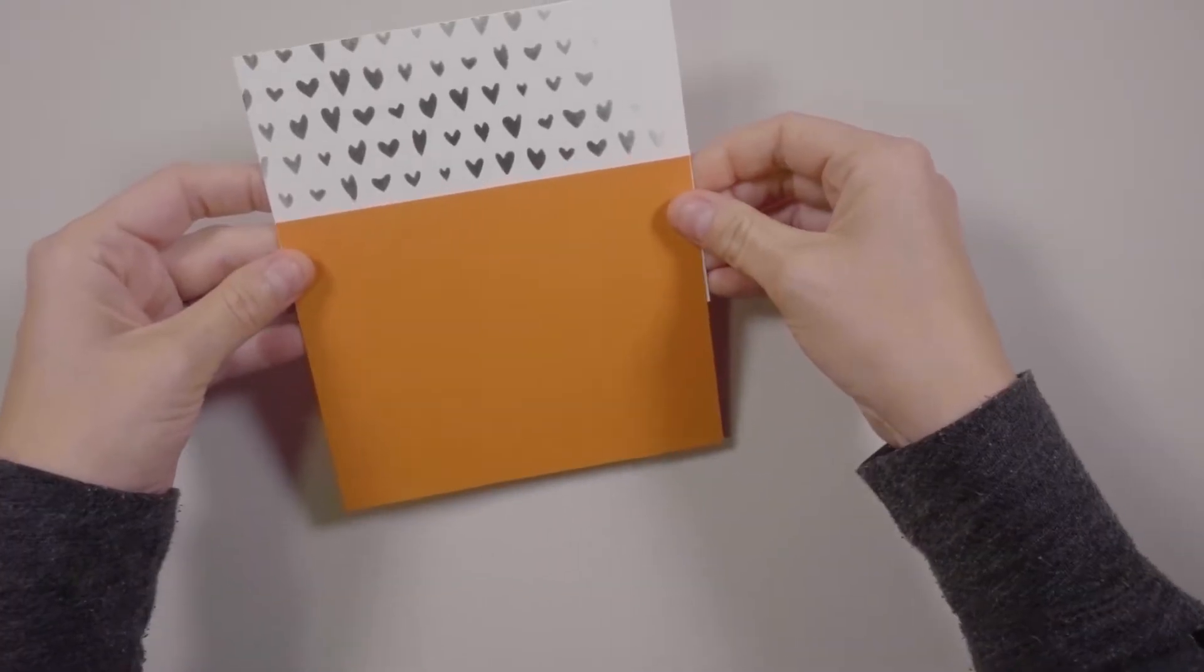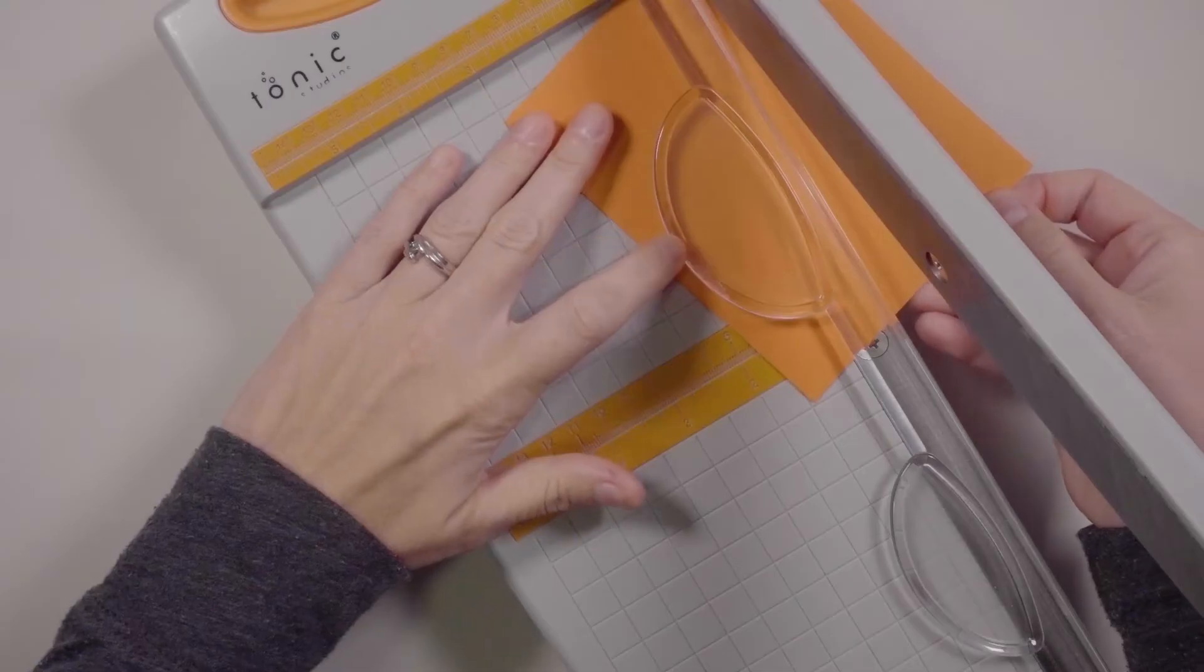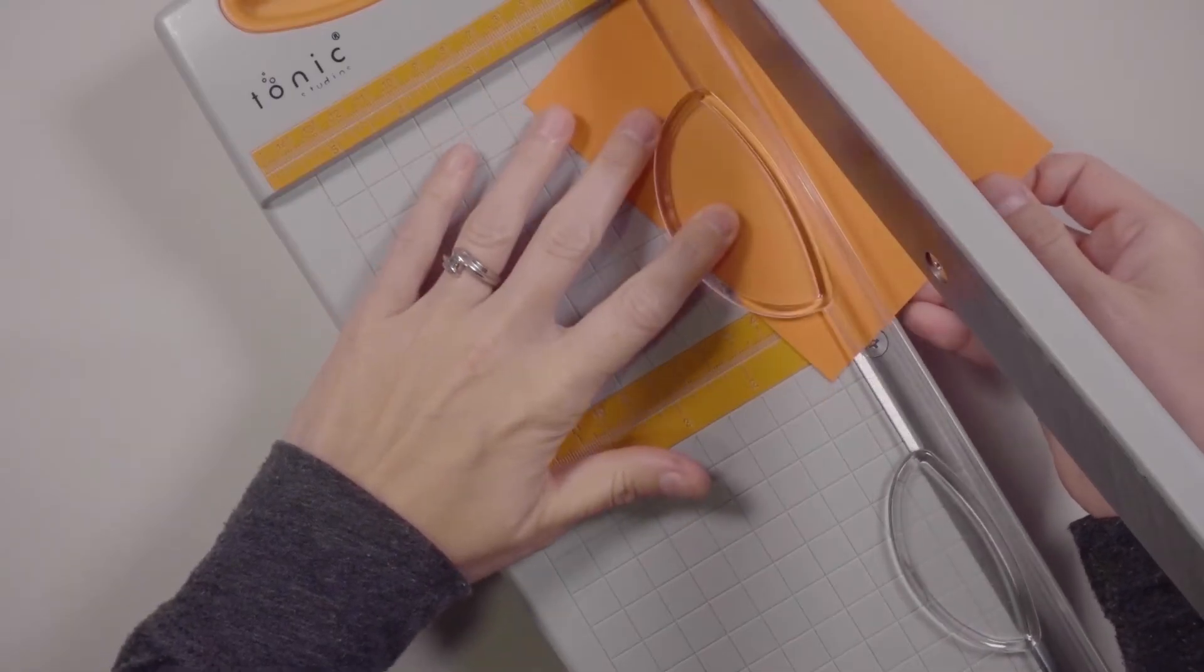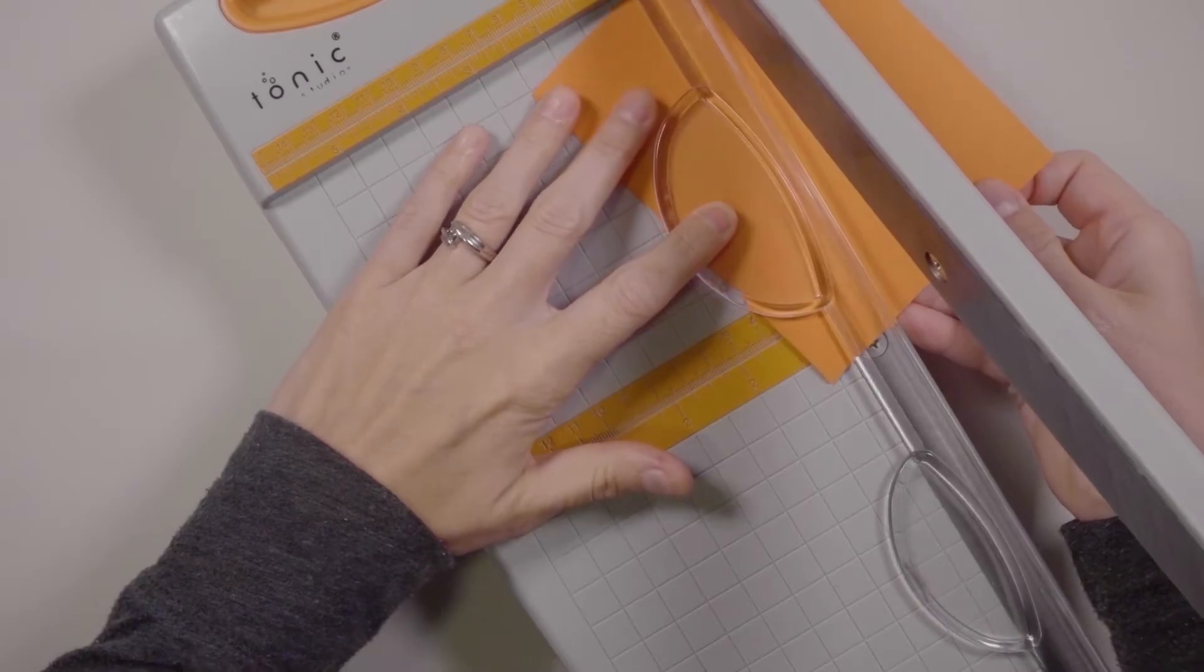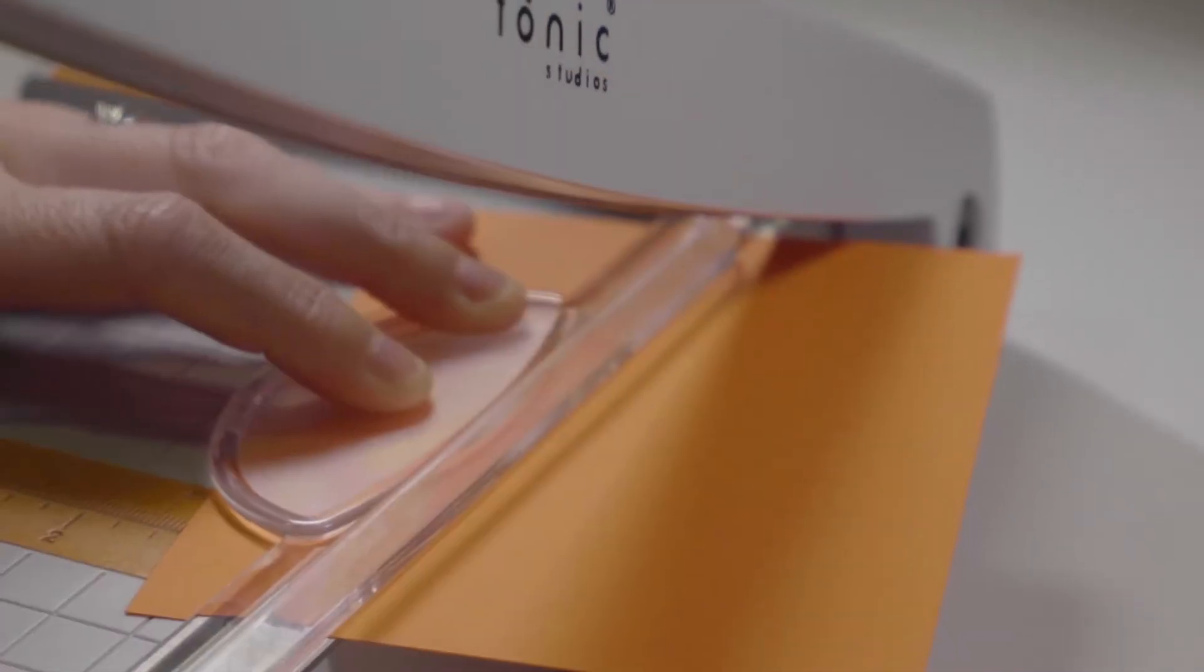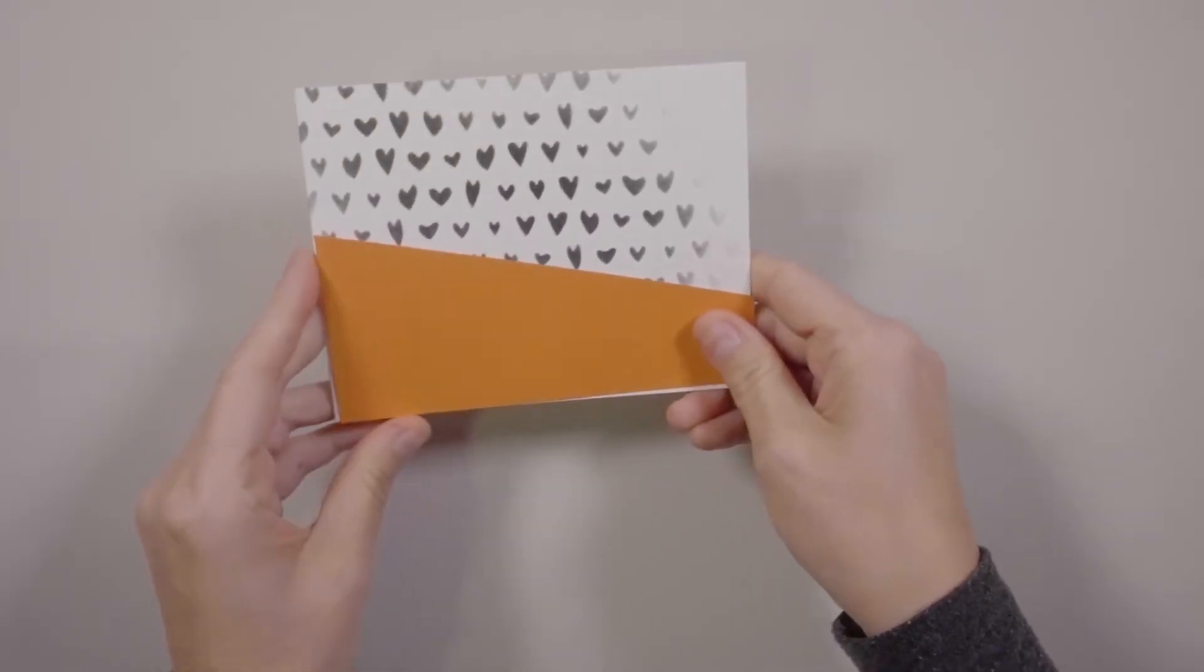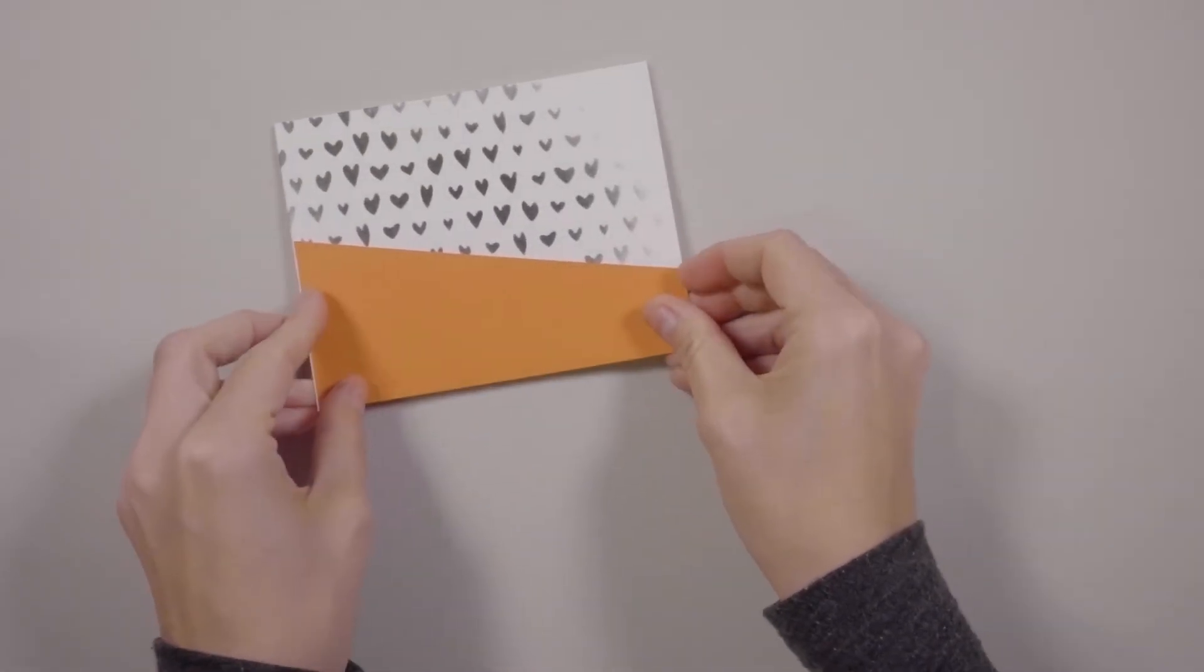Let's get the next portion of this background prepped. So I have a piece of Recollections 65 pound orange cardstock and it's cut to four and a quarter by five and a half. And I'm taking it here and cutting that piece at an angle lengthwise. This will layer on top of the stenciled background.